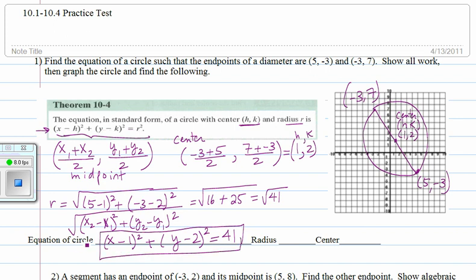So that's the answer for equation of the circle, the radius is square root of forty-one, and the center is one, two.